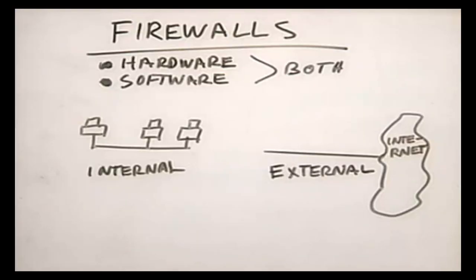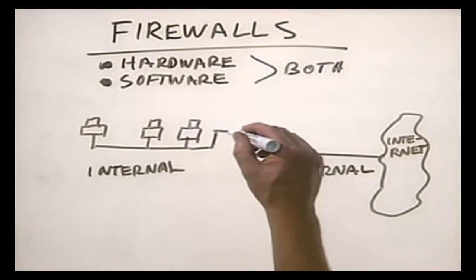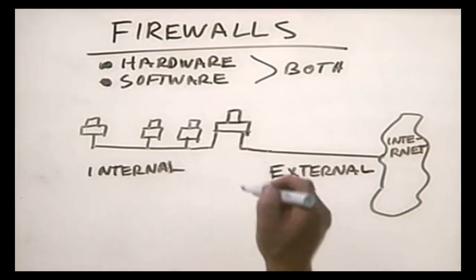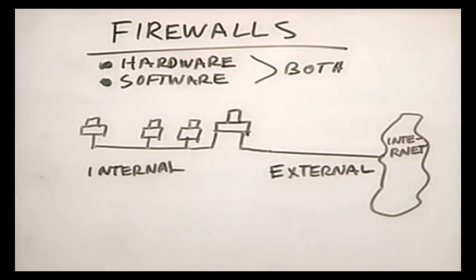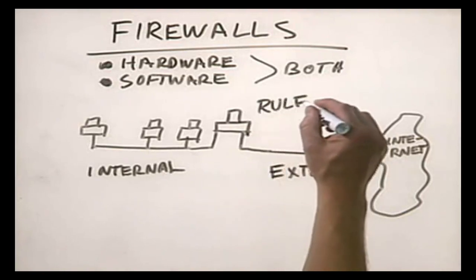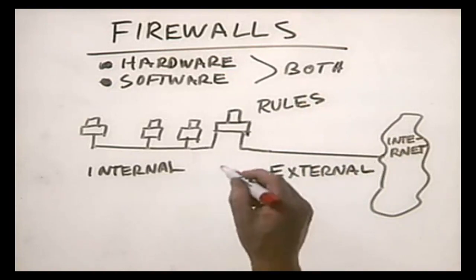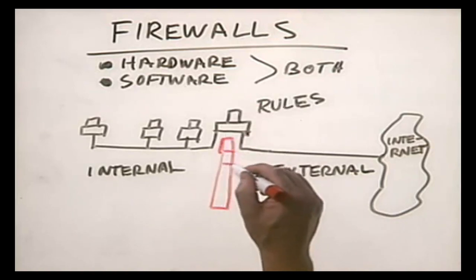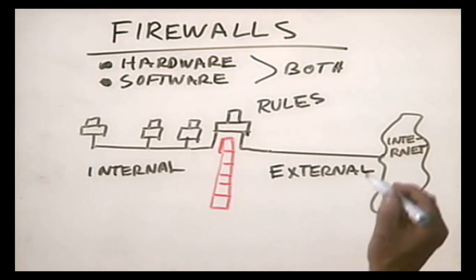Let's spend a little more time looking at how a firewall works. When we implement a firewall on a network, we place a system between our internal network and our external network. All the data that passes through this system is examined based on a set of rules that we define, which determine whether or not that traffic is allowed. By doing that, we have erected a firewall between our network and the external network.